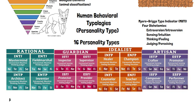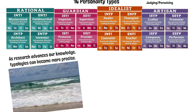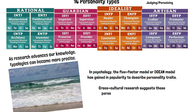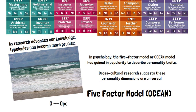When research advances in a field, the typologies can become more precise, like the addition of a new element on the periodic table of chemical elements. In psychology, the five-factor model or the OCEAN model has gained in popularity to describe personality types. In fact, cross-cultural researchers suggest that these personality dimensions are universal — meaning they are found in every single culture, every single society. So we're down to five personality dimensions that seem to be applicable wherever you are in the world.